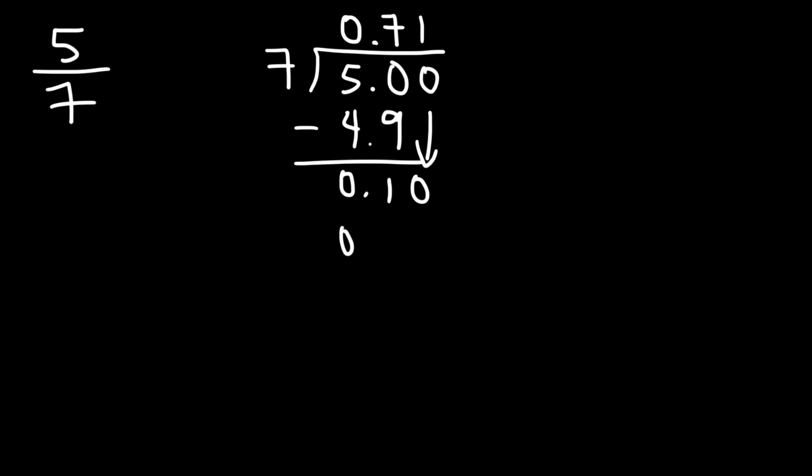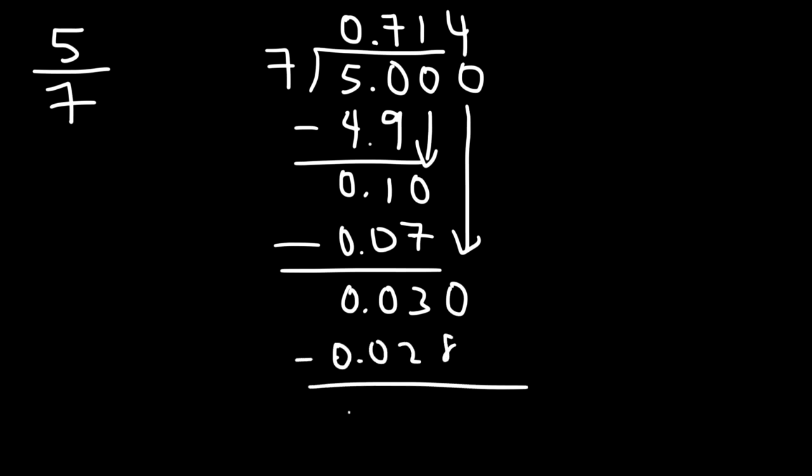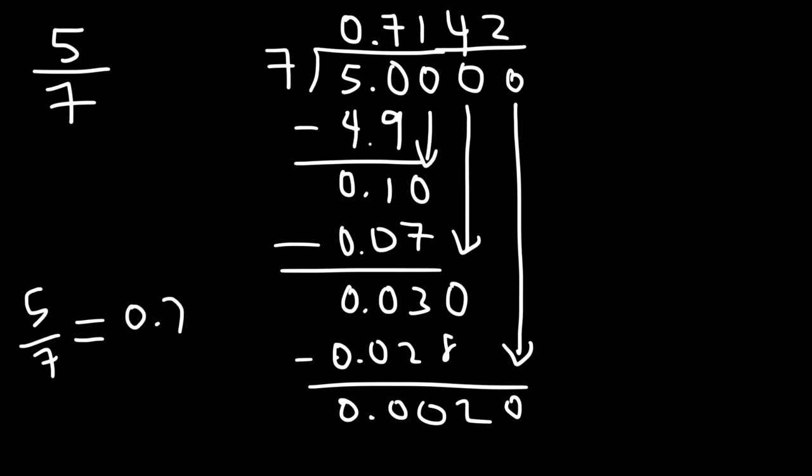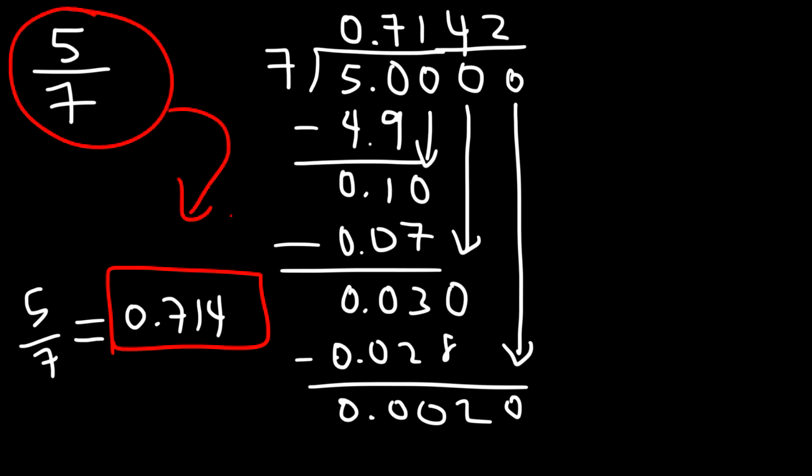Now if for some reason you don't have access to a calculator, you can use long division to determine the decimal value of 5 over 7. So 7 goes into 5 0 times. So we need to add a decimal point. 7 goes into 50 7 times. 7 times 7 is 49. So 7 times 0.7 is 4.9. Now we need to bring down the 1. 7 goes into 10 one time. 7 times 1 is 7. And the difference between these two numbers is 3. So if we bring down another 0, 7 goes into 30 four times. 7 times 4 is 28. And then if we bring down another 0, 7 goes into 20 two times. So we could stop here. And then you could say that 5 over 7 is approximately 0.714. And so you could use long division to find a decimal value of a fraction. And then you could compare the two fractions if needed.